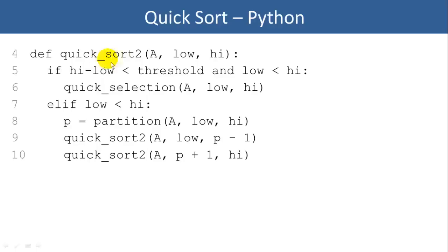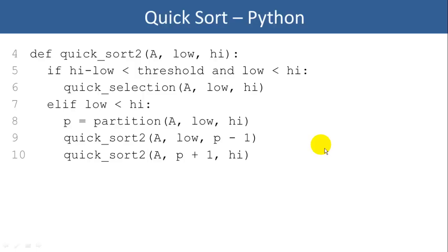One way to improve the performance of quicksort is by using selection sort for small lists — say, less than 20 items. We check if there are fewer than this threshold number of items, which is set to 20, and if so, we use selection sort. If there are more than 20 items, then we call partition and do a recursive quicksort on the left and right sides. That wraps up our video on quicksort. If you liked this video, please click the like button at the bottom of the screen. I'm Joe James — thanks for watching.